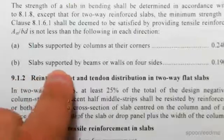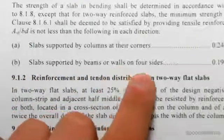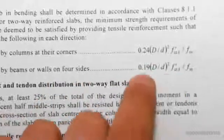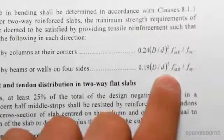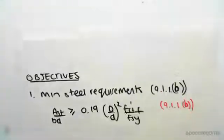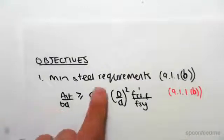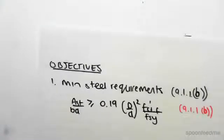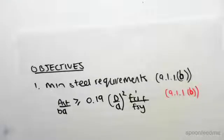We're looking at clause b because we've got a slab supported by beams or walls on four sides - that's what we have. So at the end of the day all you want to do is ensure that ast on bd is greater than all of this. Let's just look at what these values are.